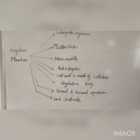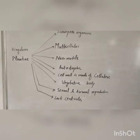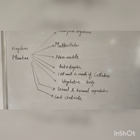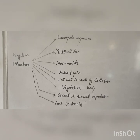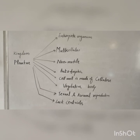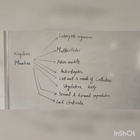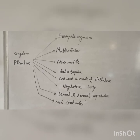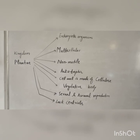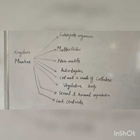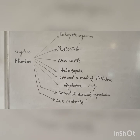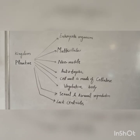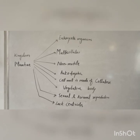The fourth kingdom is Kingdom Plantae. This kingdom contains both aquatic and terrestrial plants. They are all eukaryotes and multicellular, non-motile, and autotrophic. Their cell wall is made up of cellulose. They lack centrioles. They have vegetative bodies — stem, root, and leaves are present. Their life cycles show a clear alternation of generations, and both sexual and asexual reproductions are present.